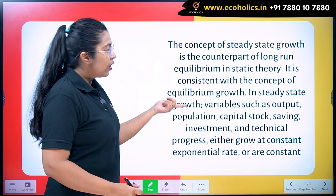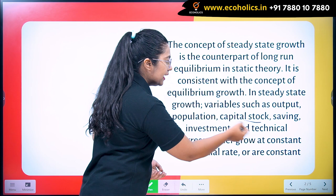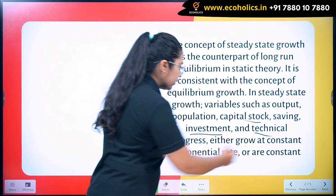When we talk about the steady state, these variables can be output, population, capital stock, the investment that is happening in the economy, or the technical progress that happens in the economy over a period of time.